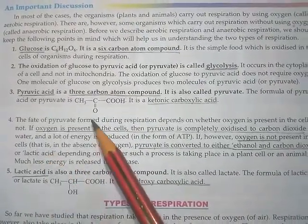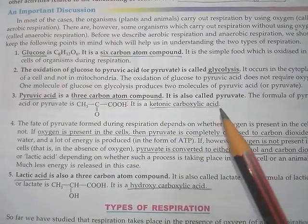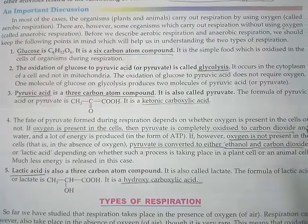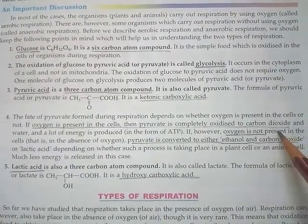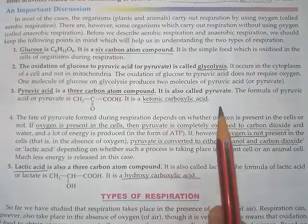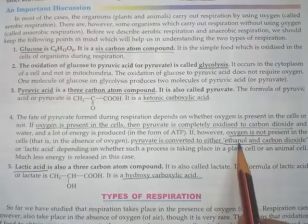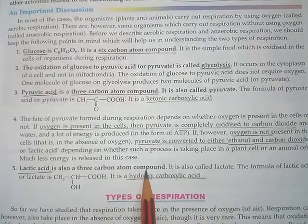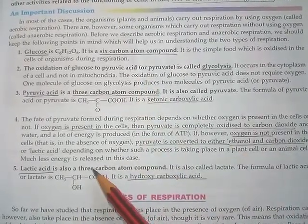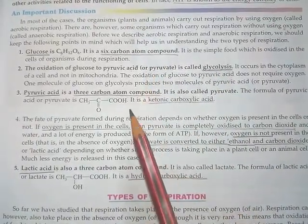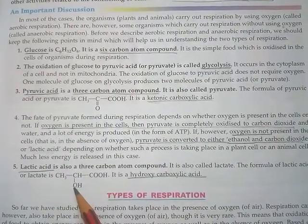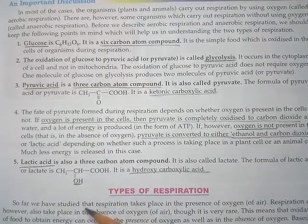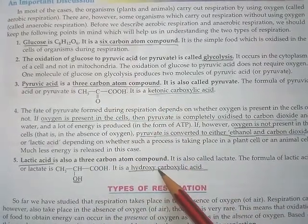There is another case: if our cells are not getting a proper amount of oxygen, then the pyruvate will not completely break down into carbon dioxide and water. Instead it will form ethanol and carbon dioxide gas, or lactic acid. Lactic acid is also a 3-carbon atom compound like pyruvic acid, but while pyruvic acid has a ketonic group, lactic acid has a hydroxyl group (OH). You will study these ketonic and hydroxyl groups in your chemistry part.